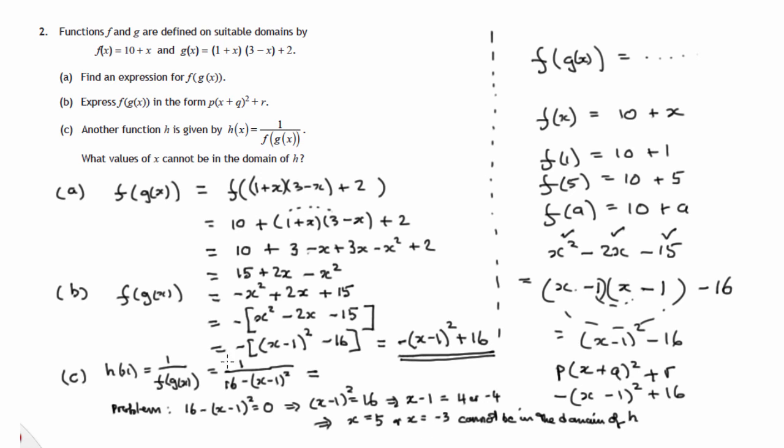Now check it. Put 5 in there, 5 minus 1 is 4, 4 squared is 16, 16 minus 16 is 0, 1 divided by 0, you can't do it. Check negative 3, negative 3 minus 1 is negative 4, negative 4 squared is 16, 16 minus 16 is 0, 1 divided by 0 cannot be done. So there are the two values that cannot be in the domain of h.